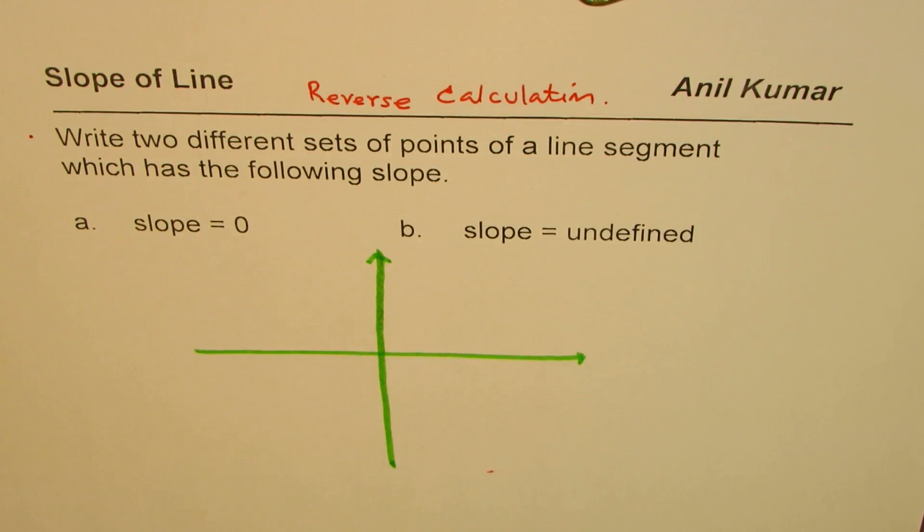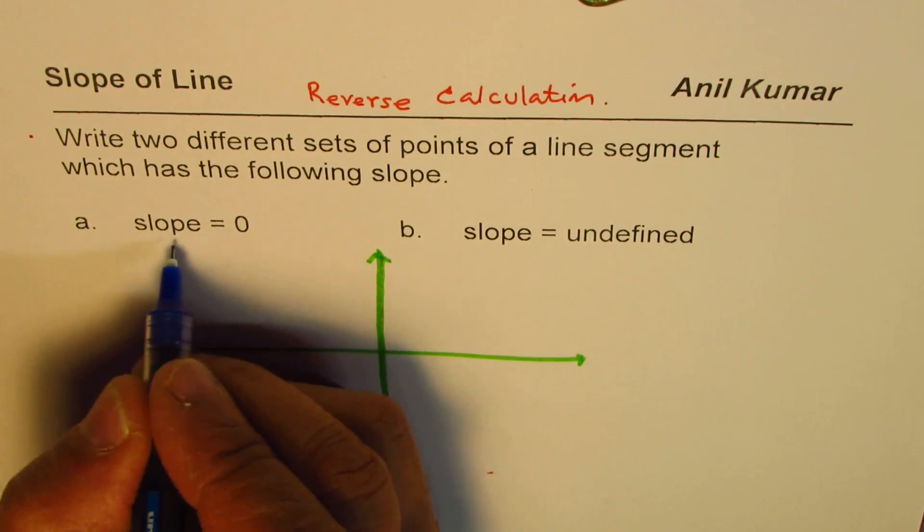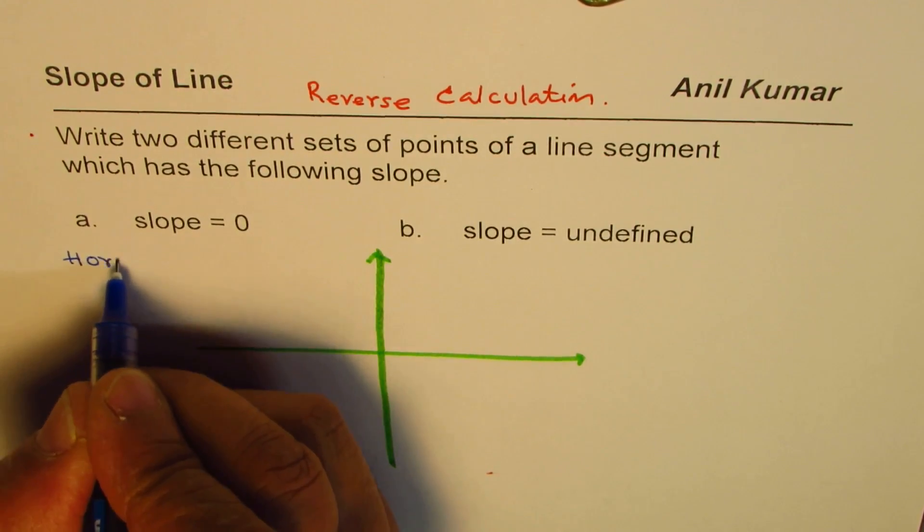Let's first consider zero slope. When I say slope is zero, it means that it is a horizontal line.